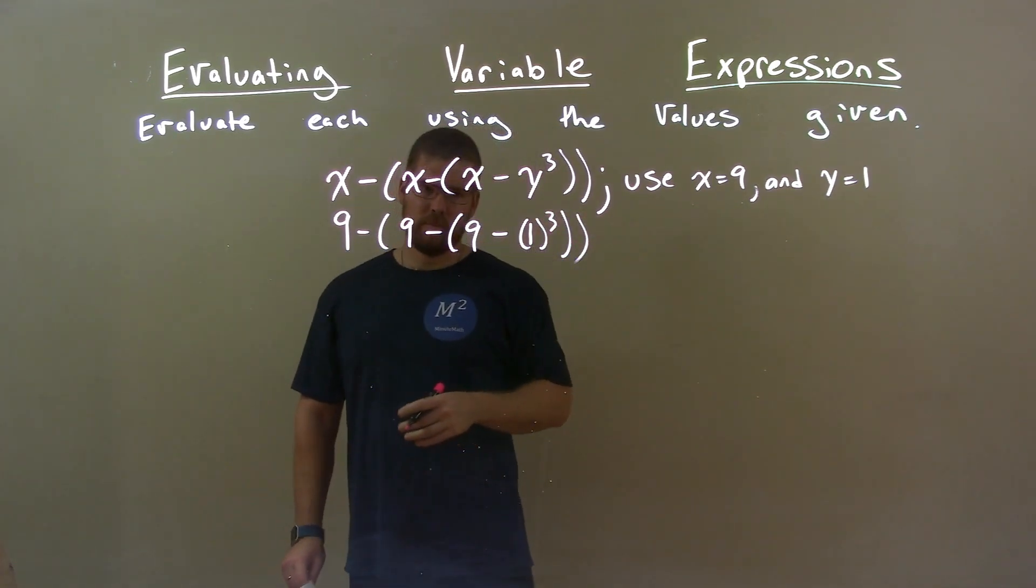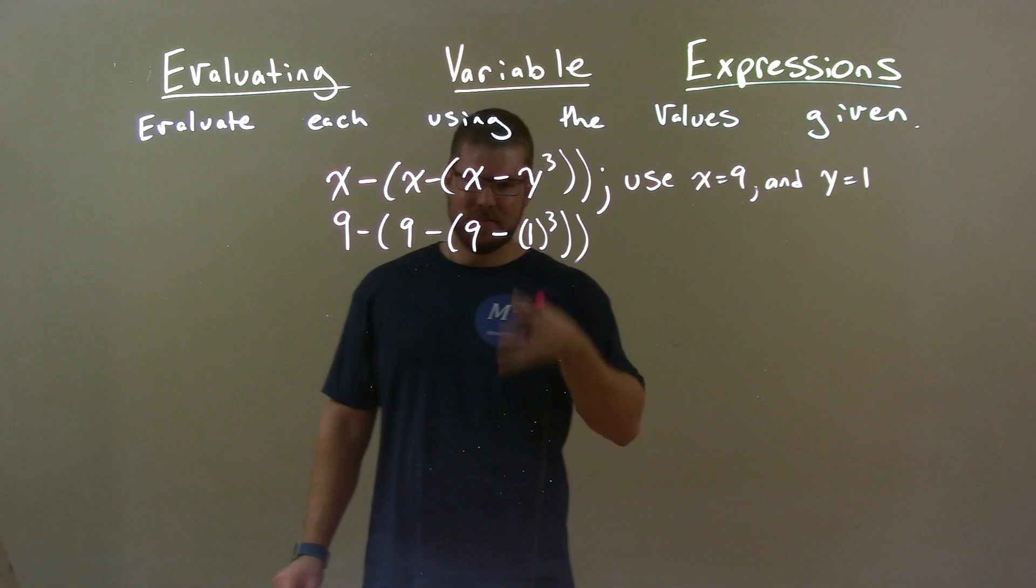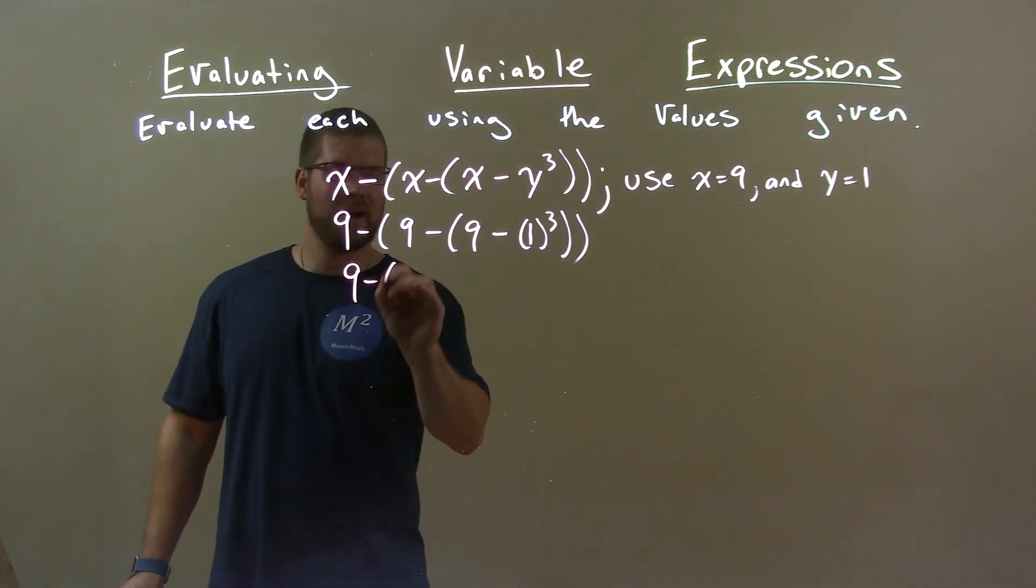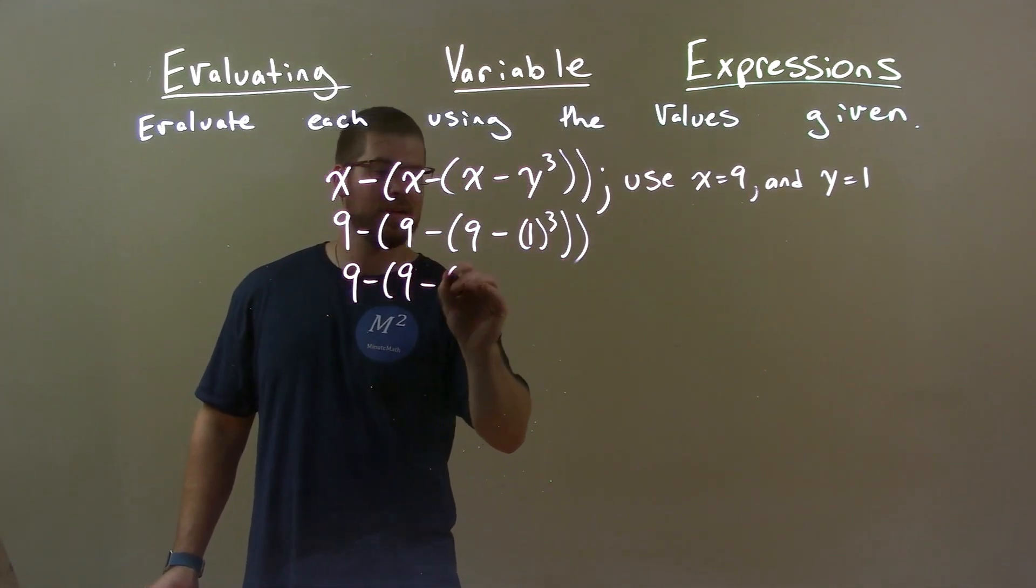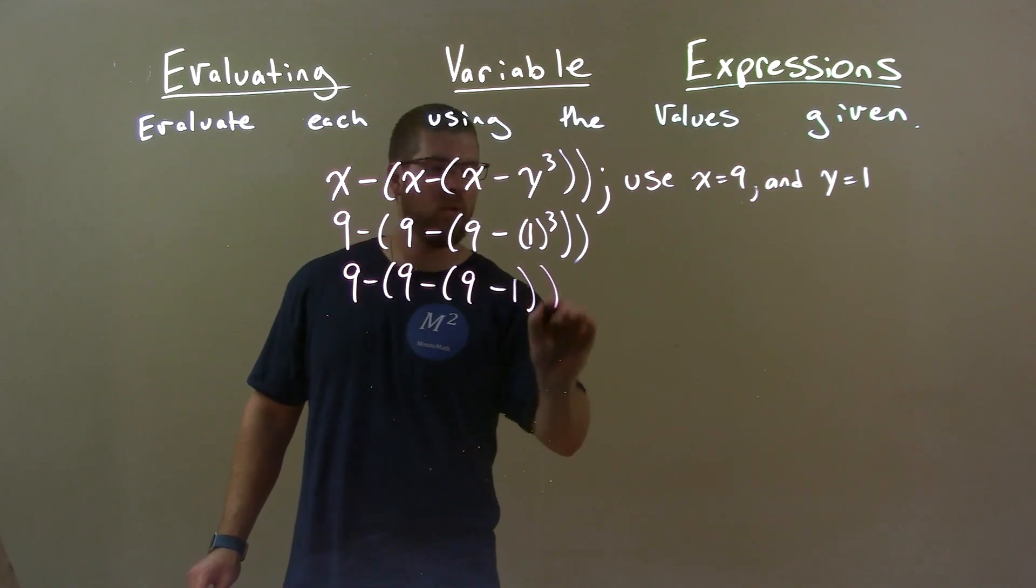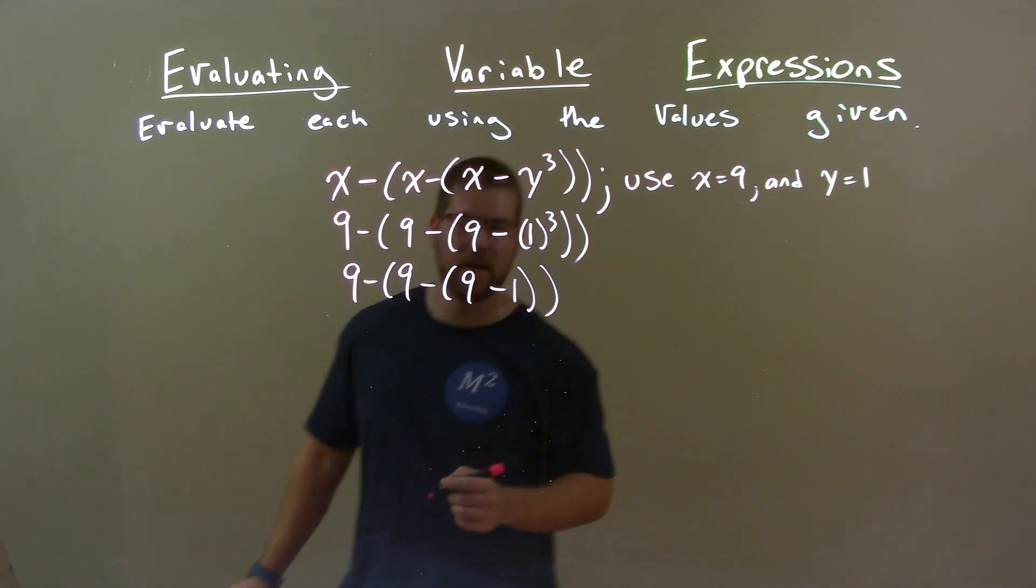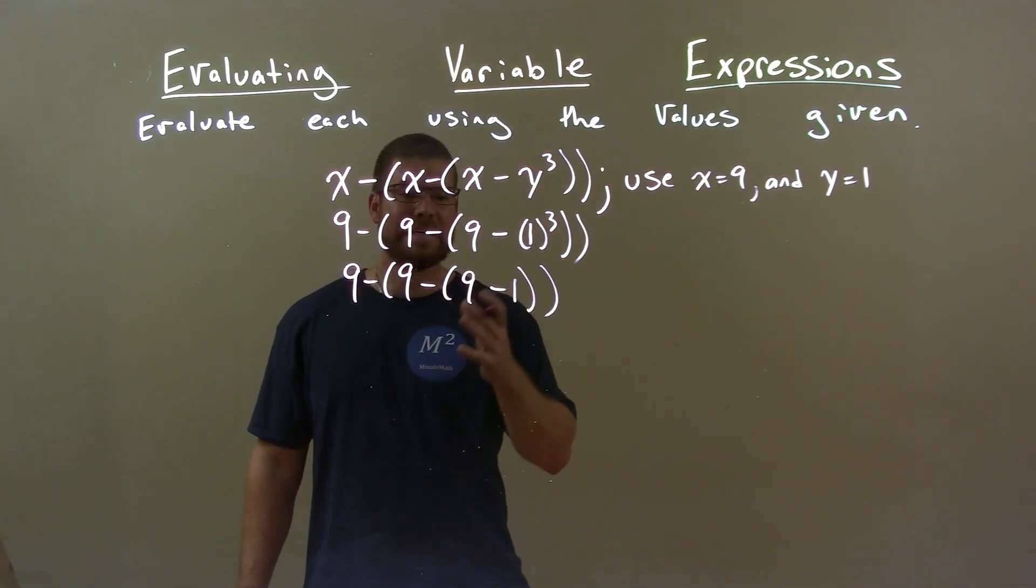Okay, now we simplify. Well, 1 to the third power is just 1. So 9 minus 9 minus 9 minus 1 here. Okay, most inside parentheses, 9 minus 1 is 8.